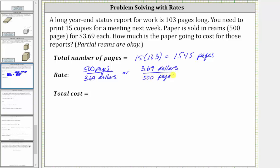We will use one of these rates to determine the total cost. To determine the total cost, we begin with the total number of pages, which is 1,545. Let's write this as a fraction with the denominator of one, so we have 1,545 pages over one, and now we will multiply by one of the rates.